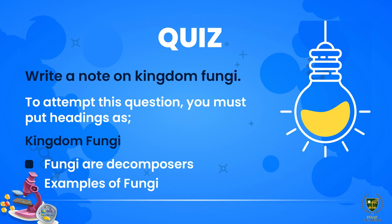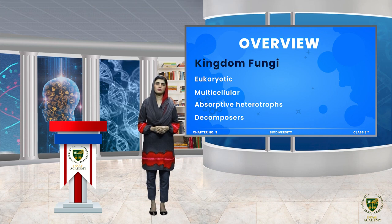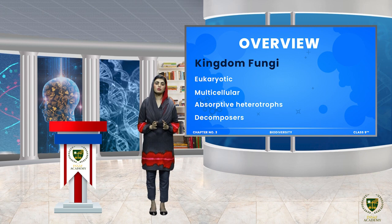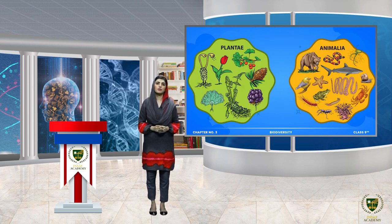Students, we have seen that organisms from Kingdom Fungi are eukaryotic, multicellular, and heterotrophs — meaning they cannot prepare their own food and they absorb food from the surface of other organisms. Organisms belonging to Kingdom Fungi are decomposers.